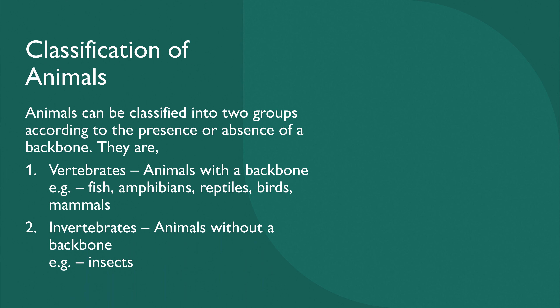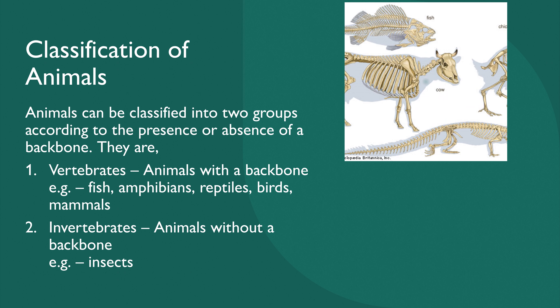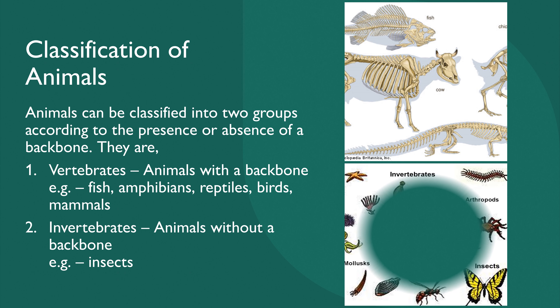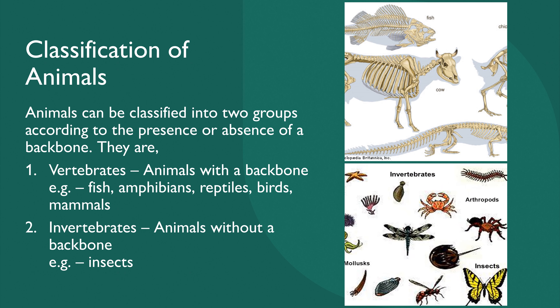The second group is invertebrates. Invertebrates are the animals that do not have a backbone — they don't have a vertebral column. For example, insects. All insects are included in the group of invertebrates. Here in this first diagram you can see the vertebral columns of a few animals, and here you have a few examples of invertebrates found in our environment.